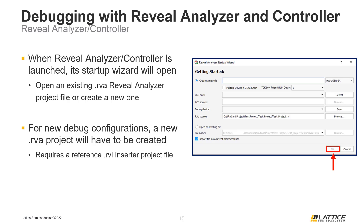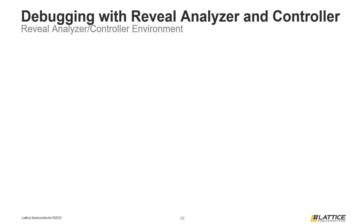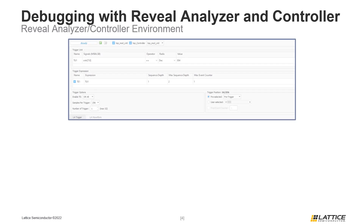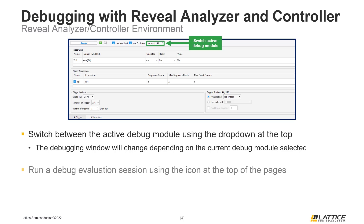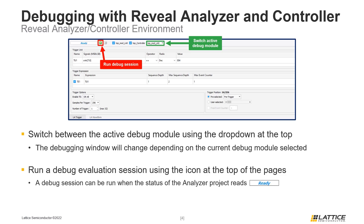Once Reveal Analyzer has been launched, users should see something similar to the figure on the slide. The contents of this window depend on the active debug core. To view and switch the active debug core, select the drop-down at the top of the window. To begin running a debugging session, use the Debug button at the top of the window. For a debug session to run, the status icon of the analyzer window should say 'Ready,' indicating the device is ready for debugging.